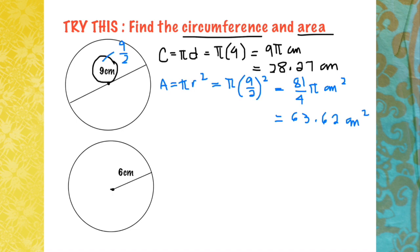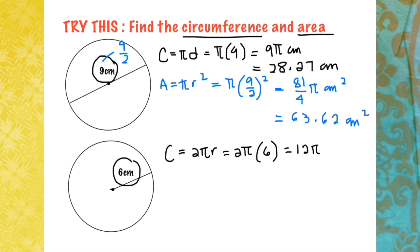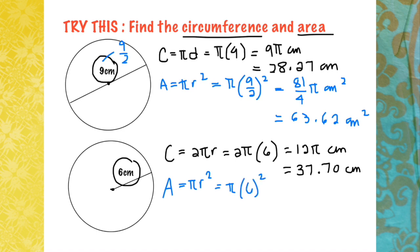In the next example, you are given the radius of 6 cm. To find the circumference, using C = 2πr and substituting, 2 times π times 6 gives us 12π cm as the exact value, or approximately 37.70 cm. For the area, using A = πr² and substituting, π times 6² gives an exact value of 36π cm², or the estimated value of approximately 113.10 cm².